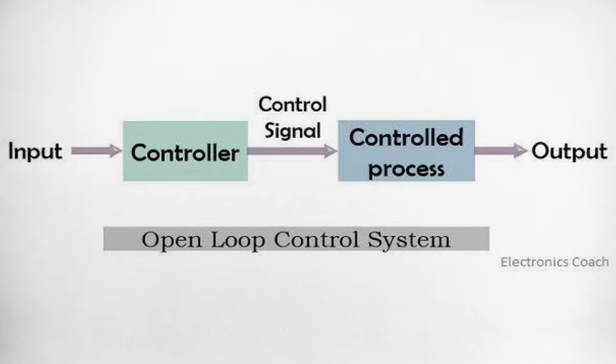In a control system with an open loop, the actions of the controller are not dependent on the intended output. This means that the output is not monitored and is not fed back to the input for comparison.